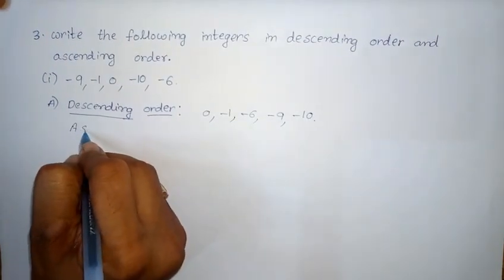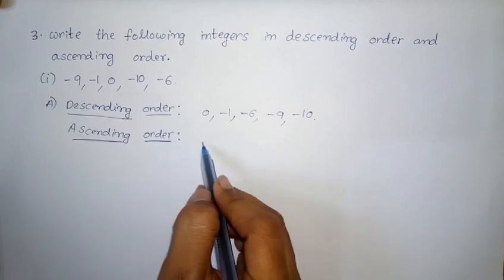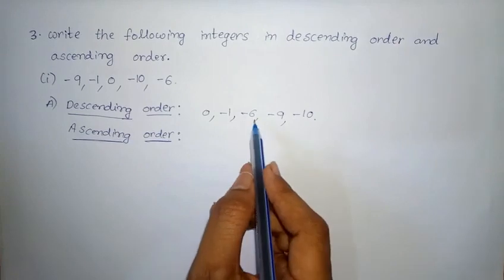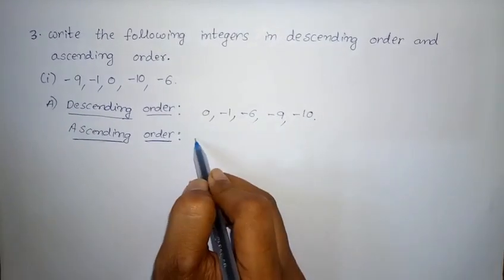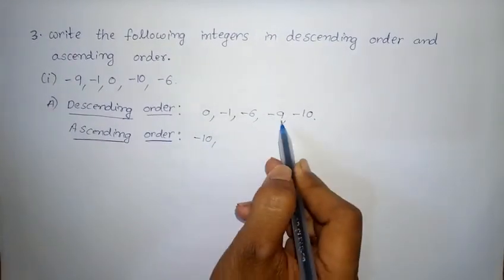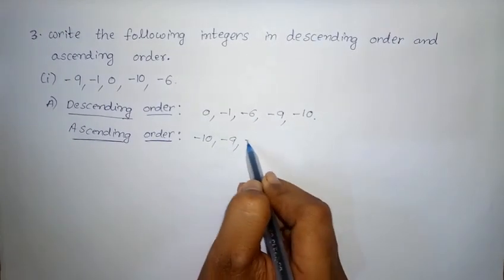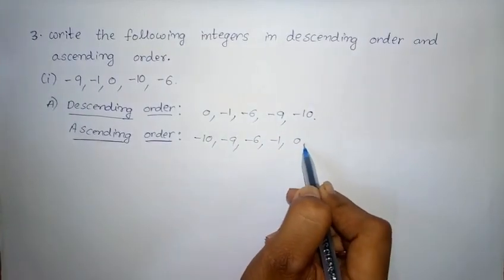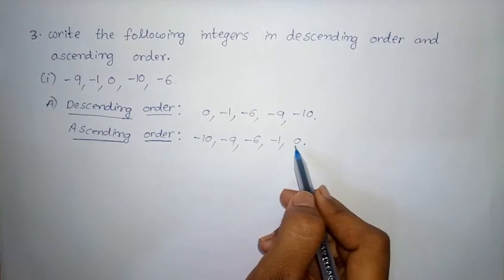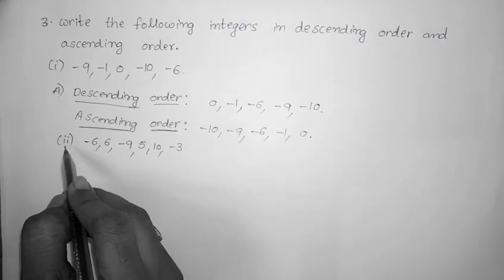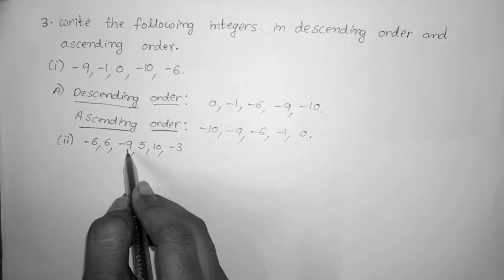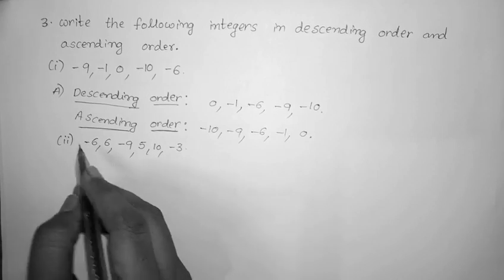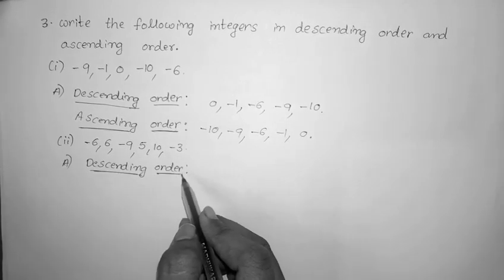Ascending order means small number to big number. Ascending order is the reverse of descending order. So: minus 10, minus 9, minus 6, minus 1, 0. 3rd Roman 2nd one: minus 6, 6, minus 9, 5, 10, minus 3. Descending order means big number to small number.